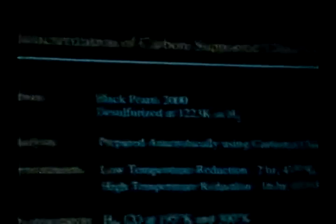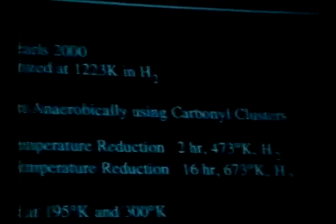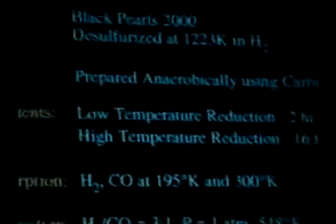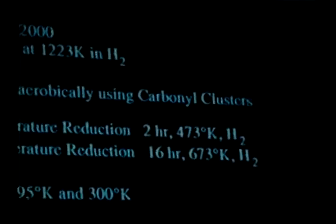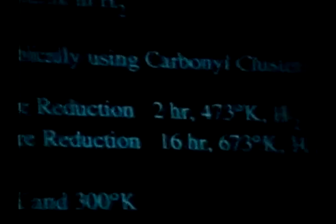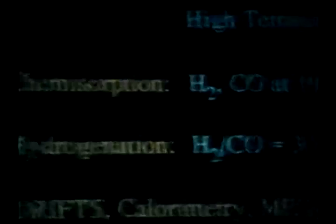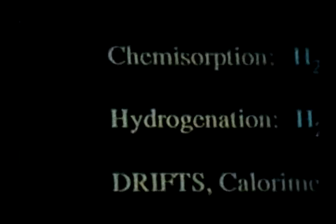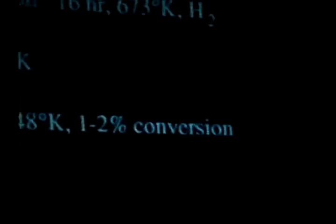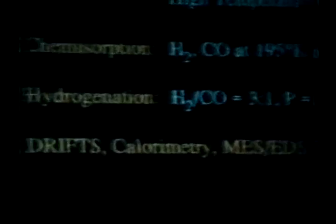The carbon was pre-treated by heating it up in hydrogen up to 1200 Kelvin to desulfurize it. Prior to impregnation, we cleaned off the carbons by vacuuming to 400 degrees C and then treated it anaerobically. The catalysts were prepared by incipient impregnation techniques. The pre-treatments used were low temperature reduction — a two-hour reduction at 200°C in hydrogen — followed by a high temperature reduction, which was a 16-hour reduction at 400°C in hydrogen.